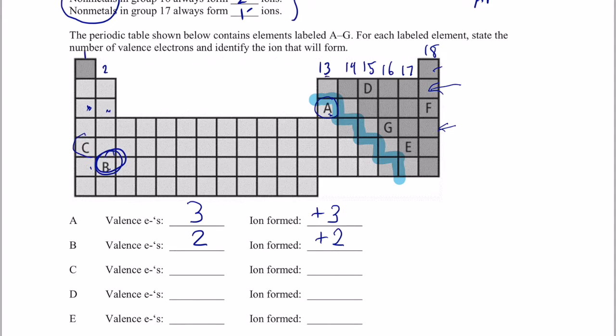Element C is in group one. So it has one valence electron. It loses that to become like the noble gas right before it. So it's positive one.